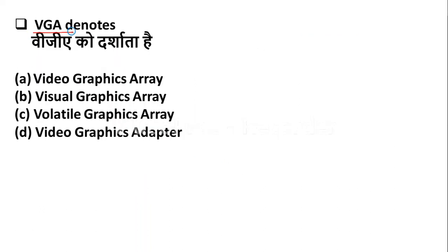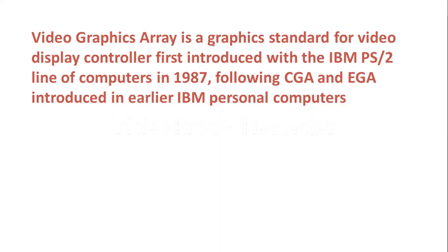VGA denotes — Option A: Video Graphics Array. Option B: Visual Graphics Array. Option C: Volatile Graphics Array. Option D: Video Graphics Adapter. The right answer is Option A — Video Graphics Array. VGA is a graphic standard for video display controllers. It was introduced by the IBM PS/2 line of computers in 1987.